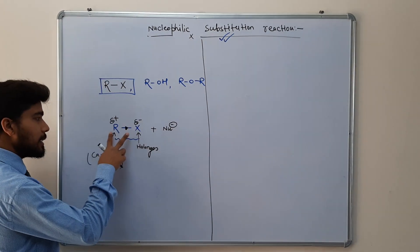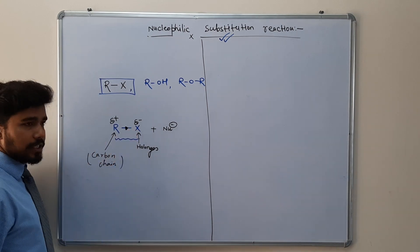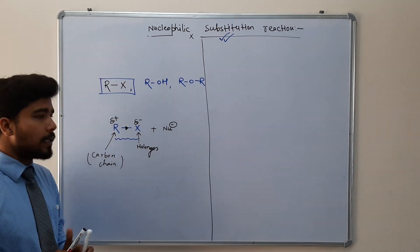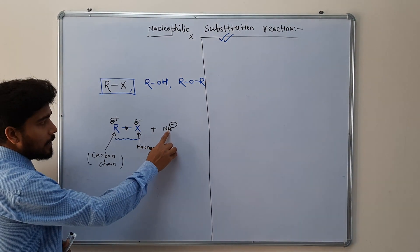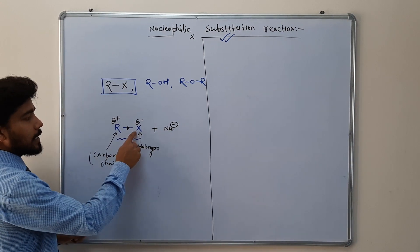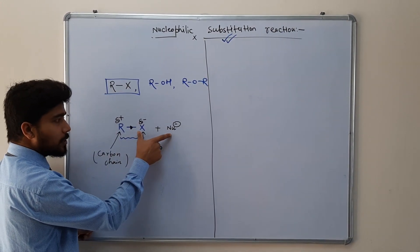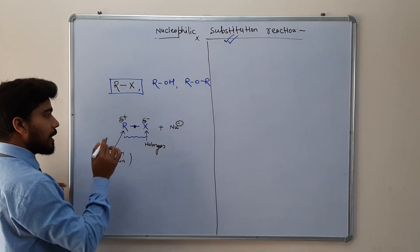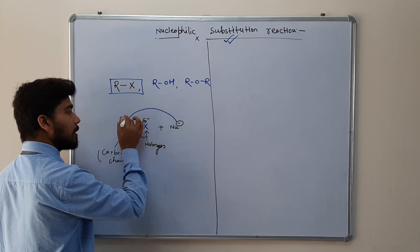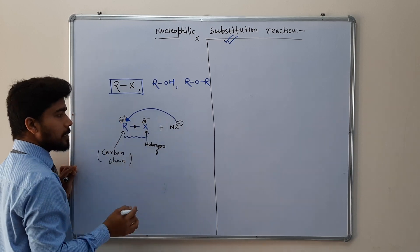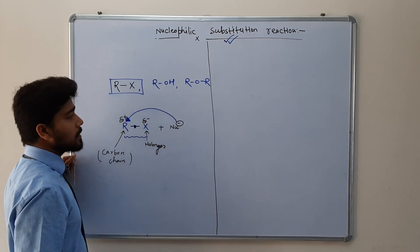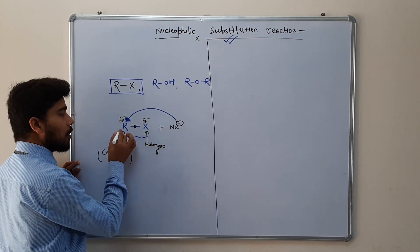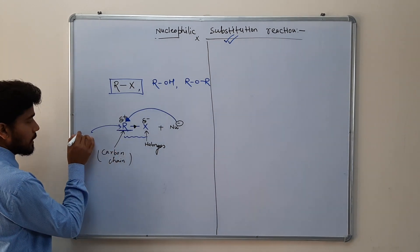Now we know that the carbon center is positively charged and the halogen center is negatively charged. Since the nucleophile is also negatively charged, it will not interact with the halogen — opposite charges attract and similar charges repel. So the nucleophile has only one center to interact with: the positively charged carbon, which we call an electrophilic center. The movement of electrons is represented by an arrow in the direction of electron movement, so the nucleophile attacks the electrophilic center.